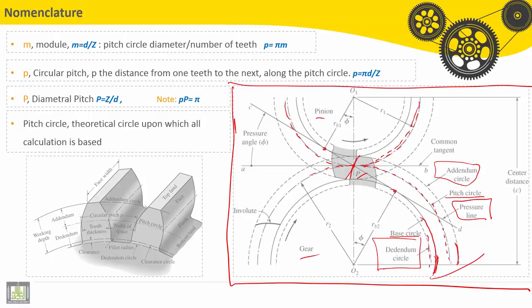We can see the pressure angle here. The contact point P is on the line, the common tangent between both pitch circles on the gear and the pinion.